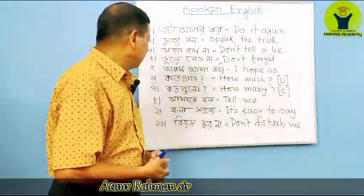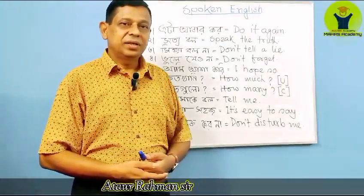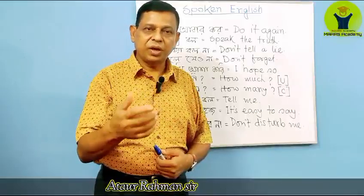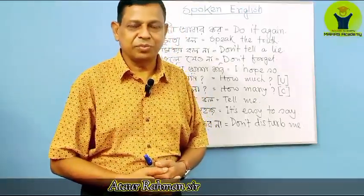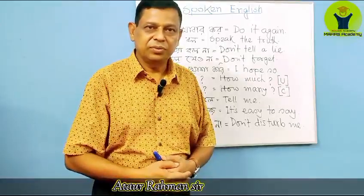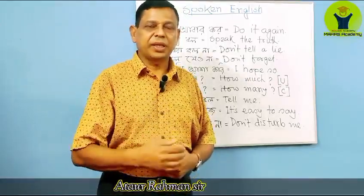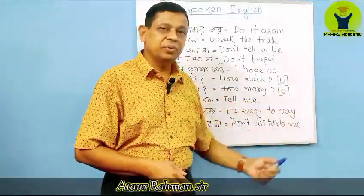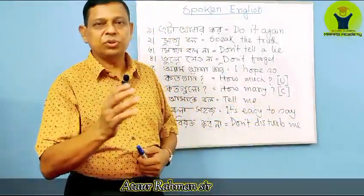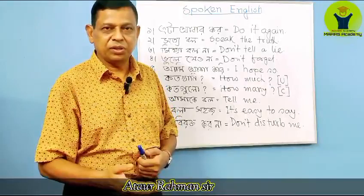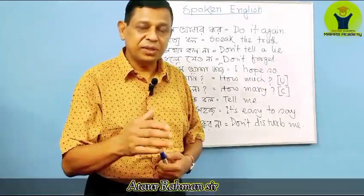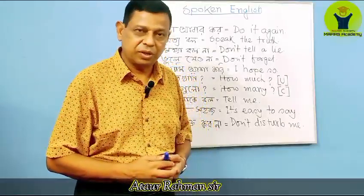'Kato khani' means how much. How much is used for uncountable nouns. How many is used for countable nouns. For example: 'How many books do you want?' — here book is a countable noun. And 'How much milk do you want?' — here milk is an uncountable noun.